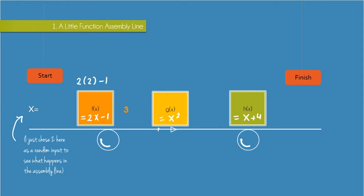Now the 3 gets sent to g of x where we'll have 3 squared which is just equal to 9, and then the 9 gets sent to h of x where we have 9 plus 4 which is just equal to 13.